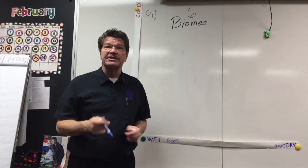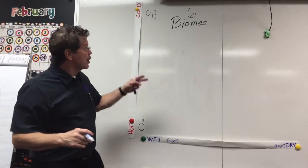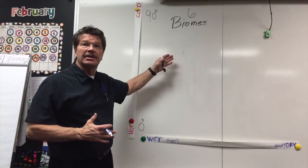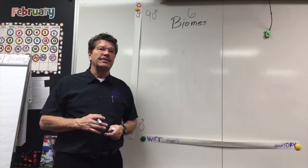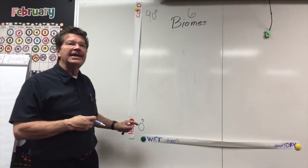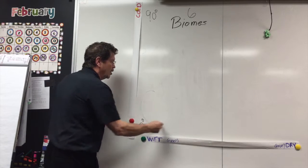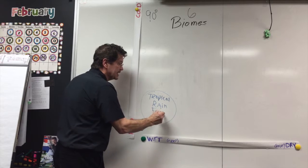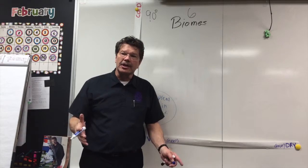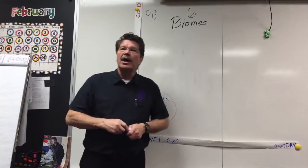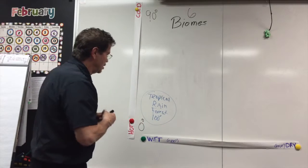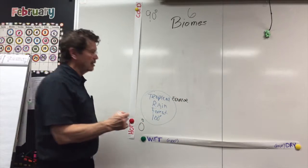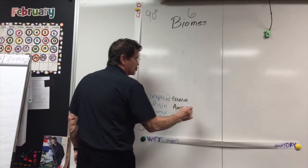Let's look at the first biome — one of my favorites because I love going there — the tropical rainforest. The tropical rainforest is on the equator, so on our chart it is hot and wet. It's called a rainforest because it gets over 100 inches of rain each year — a lot of rain, and it's hot. Where is one of these located? Along the equator. Can you name one? The Amazon — that's the tropical rainforest.